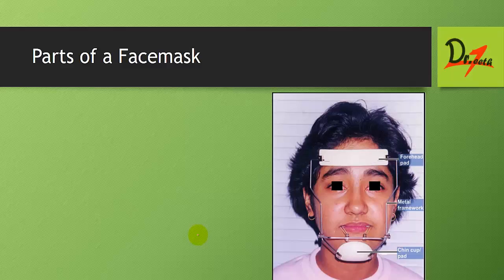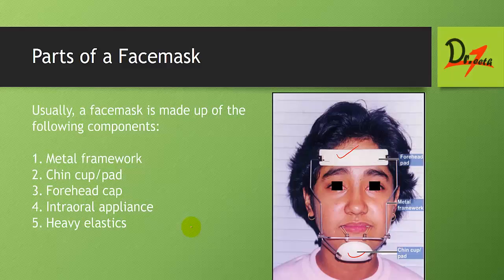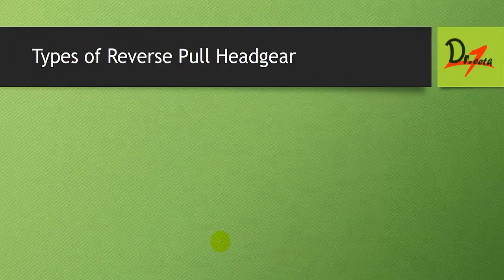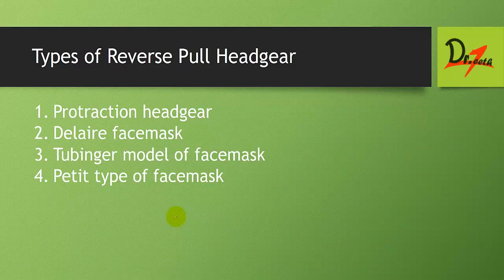The parts of a face mask: it gets anchorage from the forehead and chin, usually both. A face mask is made up of a metal framework, a chin copper pad, a forehead cap, intraoral appliances, and heavy elastics. Types of reverse pull headgear include the protraction headgear, the Diller face mask, the Tübinger model of face mask, and the pitted type of face mask.